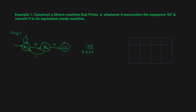In state C, if you get input 0, you go to state C itself. Why? For example, if you get the sequence 0, 0, 0 — the output sequence is: you get 'b' in starting state A, then go to state B for input 0 and get output 'b' again, then go to state C and get output 'A' because you have encountered '00'. Again you encounter 0, you go to state C itself and the output is 'A' because this sequence is also '00'. And in state C, if you get input 1, you go to state A.